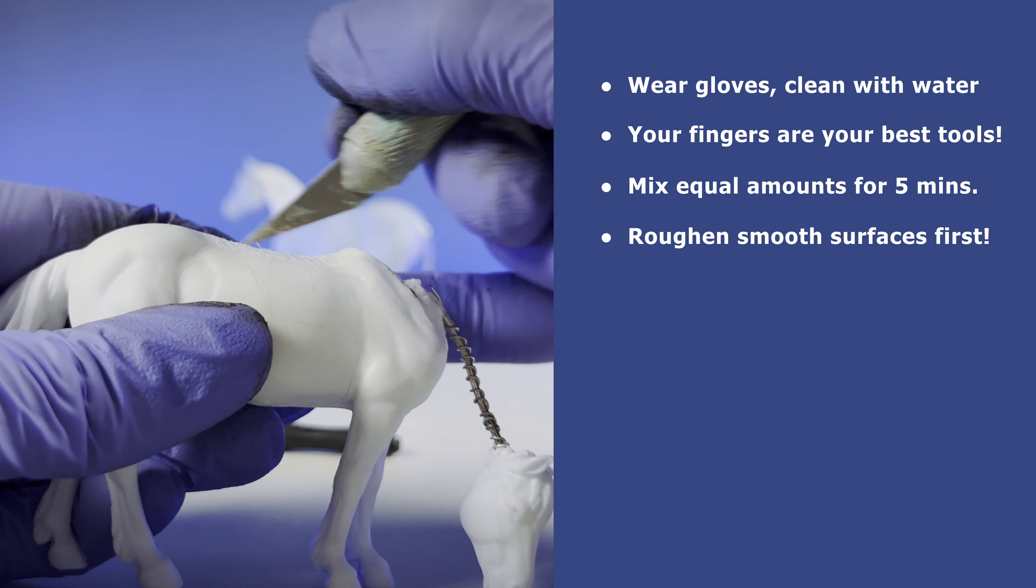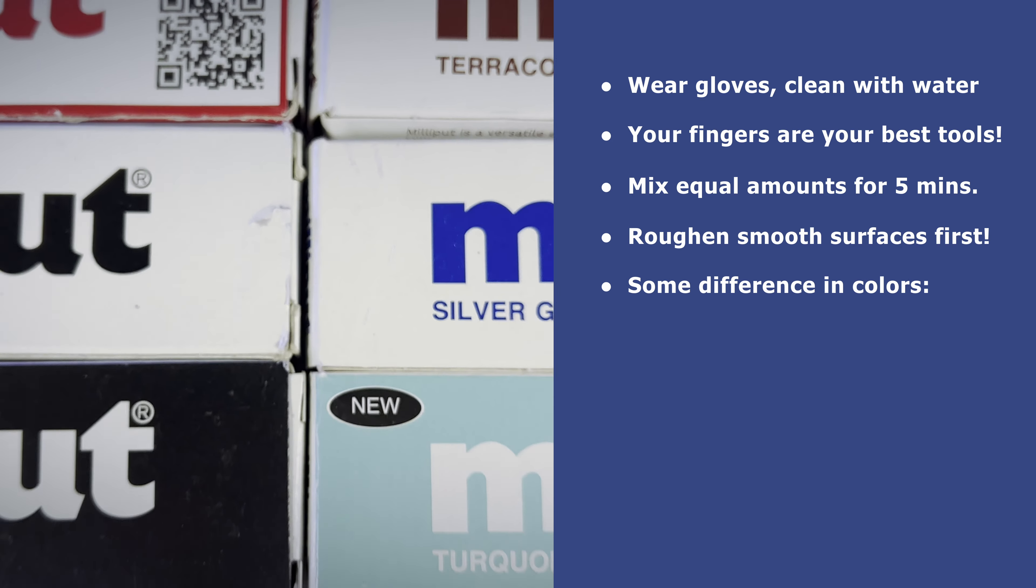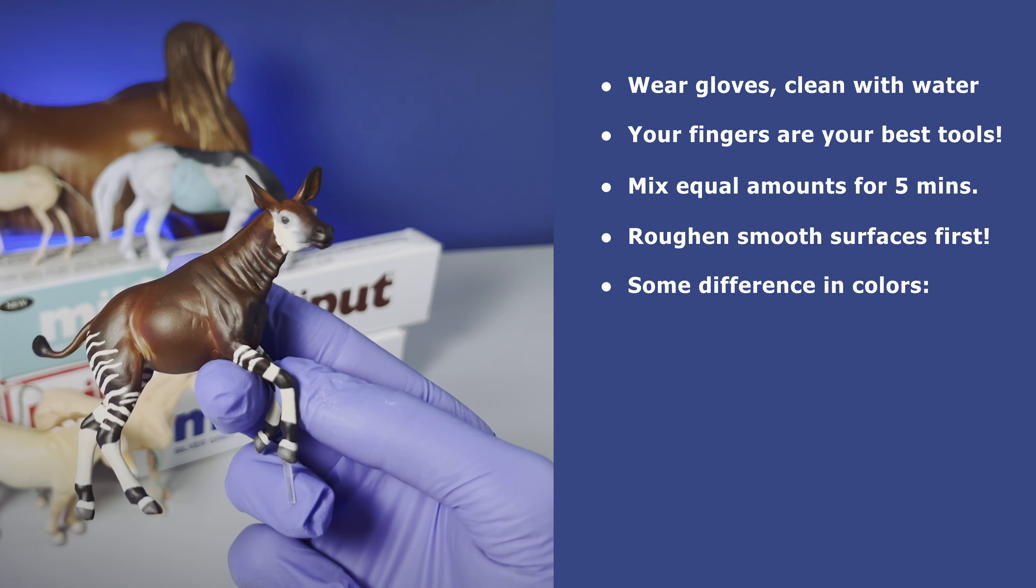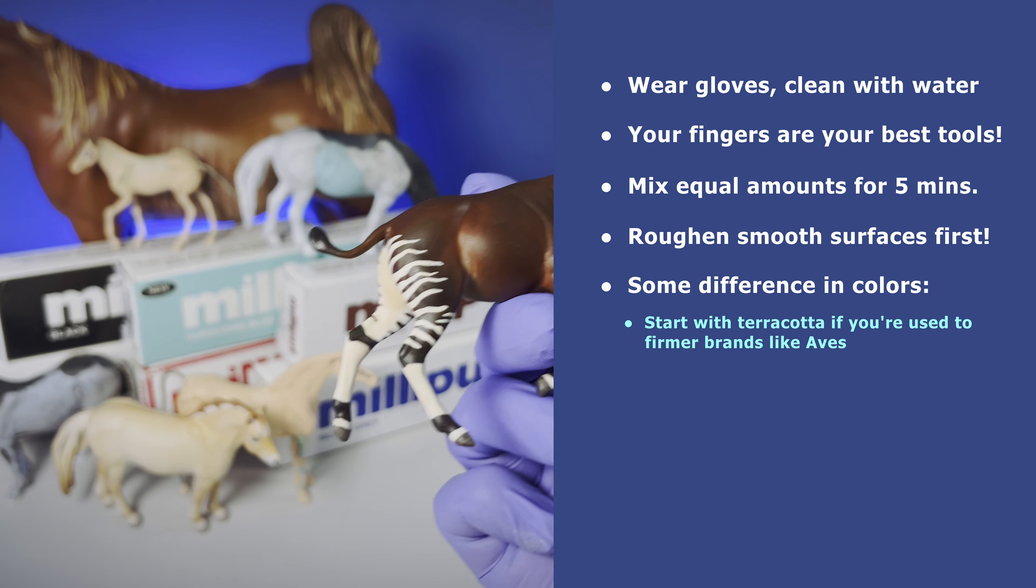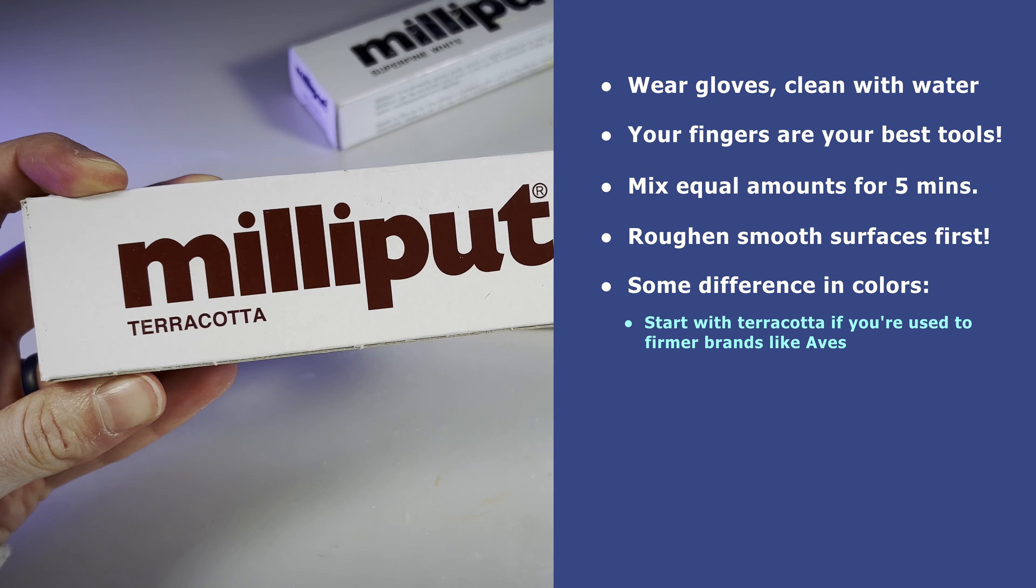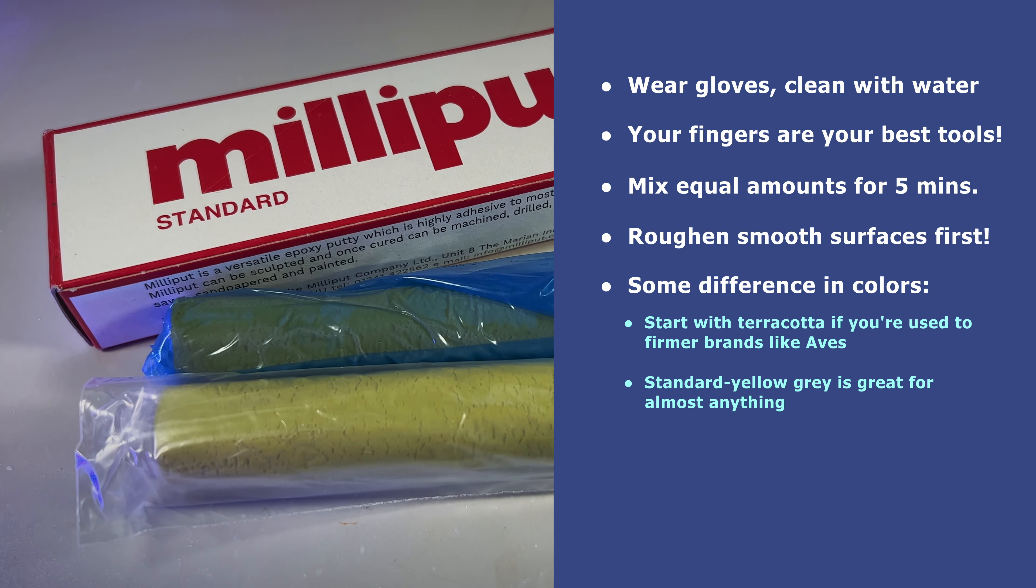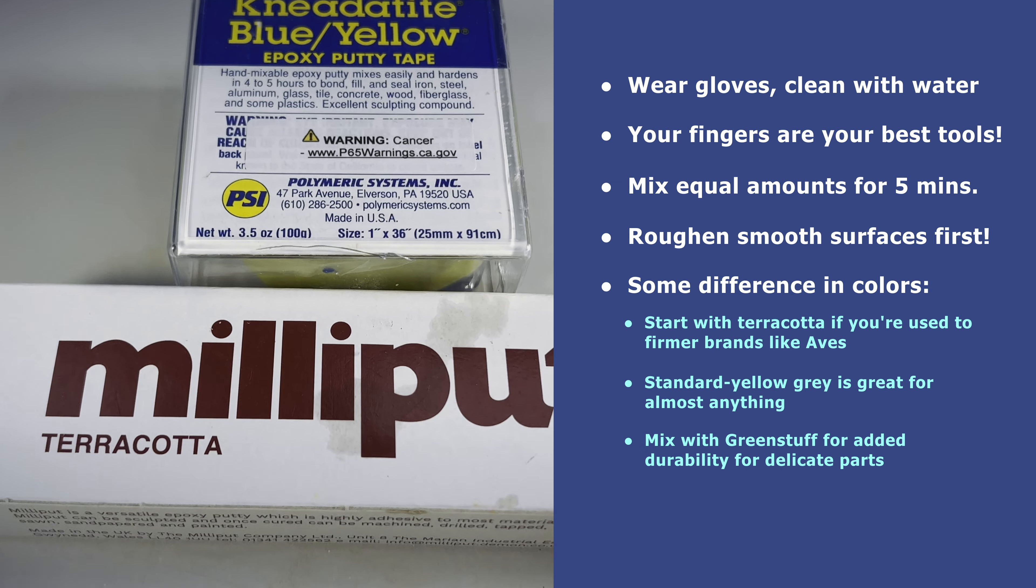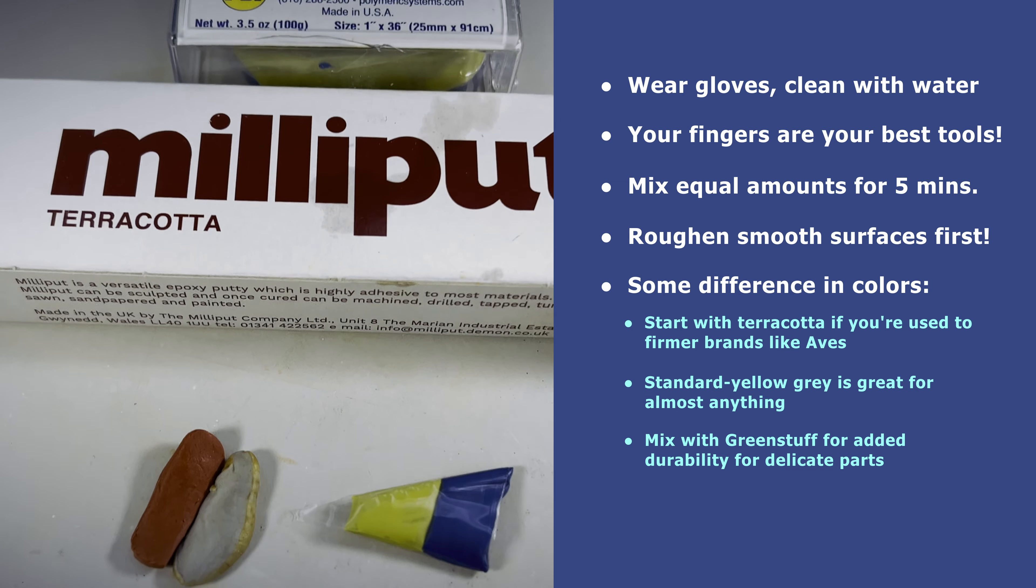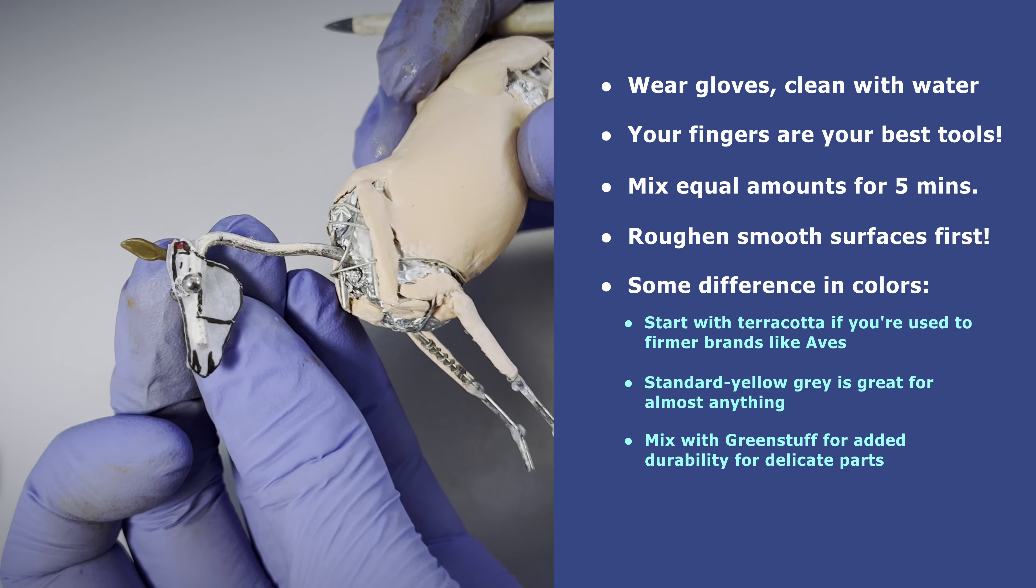If sculpting onto smooth surfaces, rough up the surface first. While generally all soft, the colors make a little difference. If you want the slightly firmer version for easier details or because you are used to other brands, start with terracotta. If you want something in between that can do almost anything, get the standard yellow gray. If you need added durability for delicate parts, mix in a rubbery epoxy putty like Neatatite or Green Stuff.